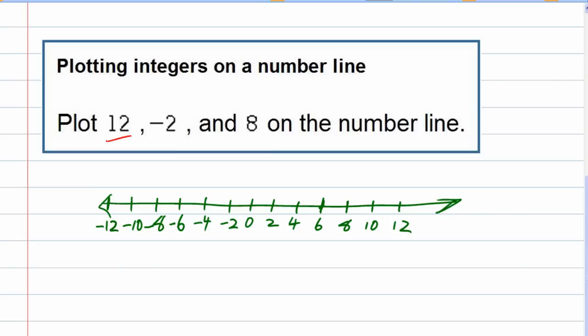I didn't have to make it the same on both sides — I just think it looks better that way. So now when it comes to plotting these: 12 is all the way over here on the right because it's a positive 12. For negative 2, it is to the left of 0 — there's my negative number. And for 8, that's positive, so it is going to be on the right-hand side.